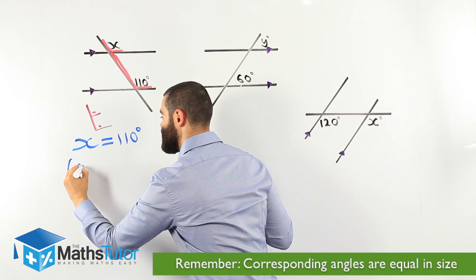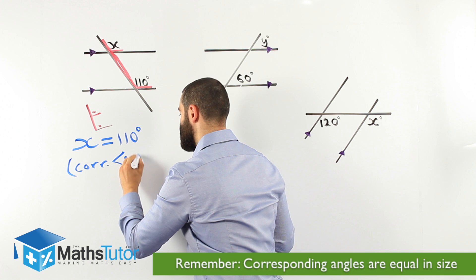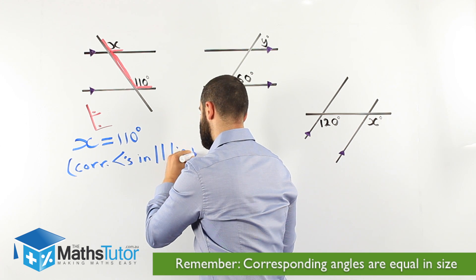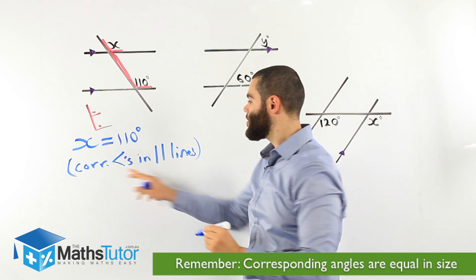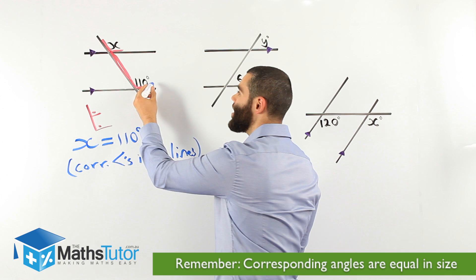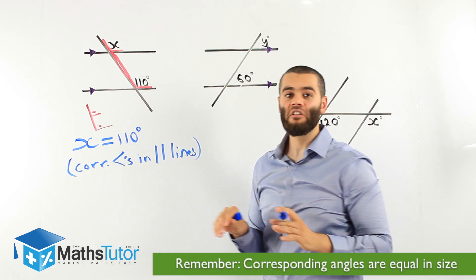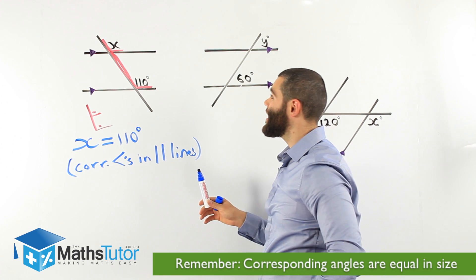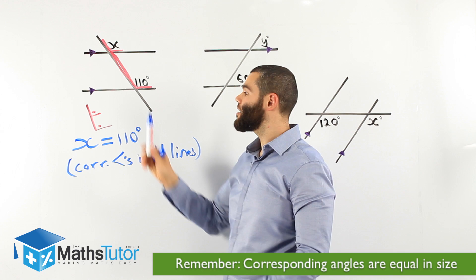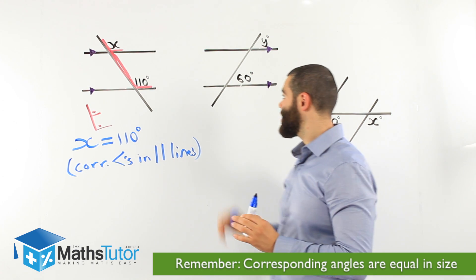We have to write our reason: corresponding angles in parallel lines. That's our reason — corresponding angles in parallel lines. We highlighted each angle, joined them together, and we know that corresponding angles make an F-looking shape. Therefore this makes an F-looking shape, these are corresponding, and corresponding angles are equal.